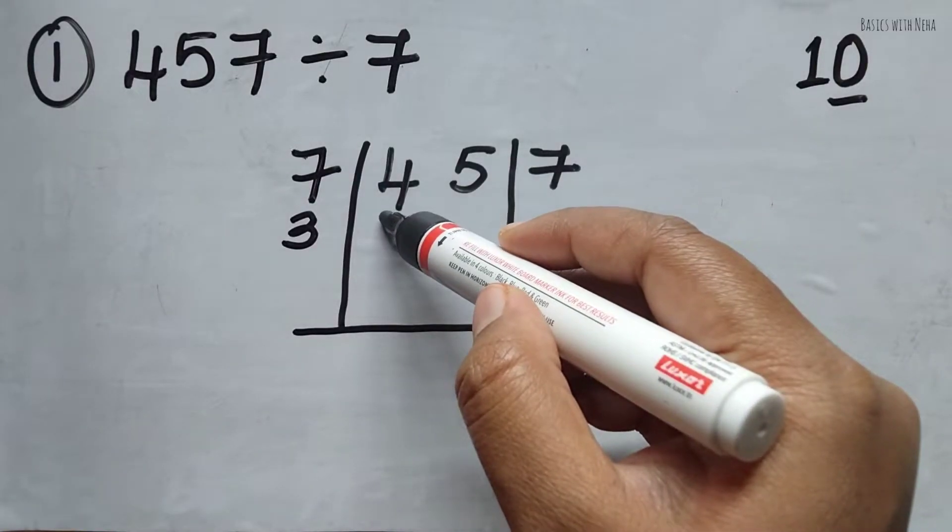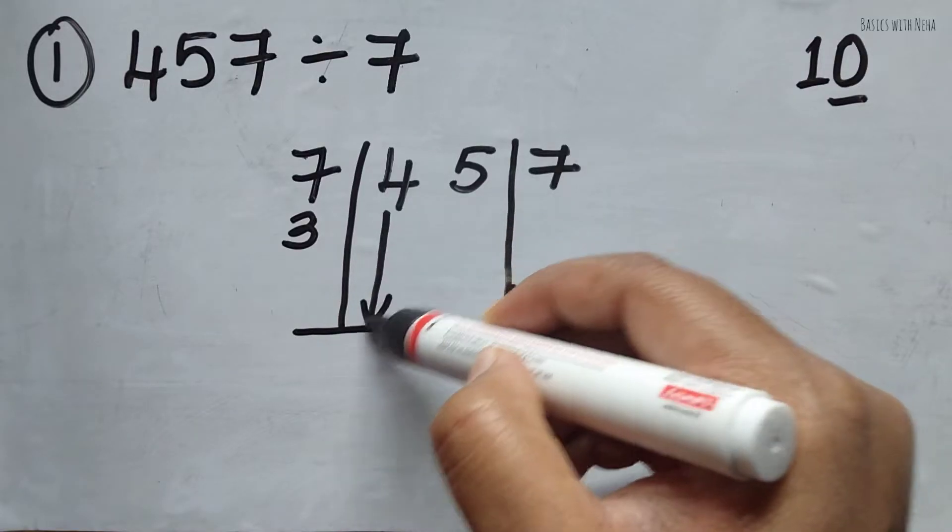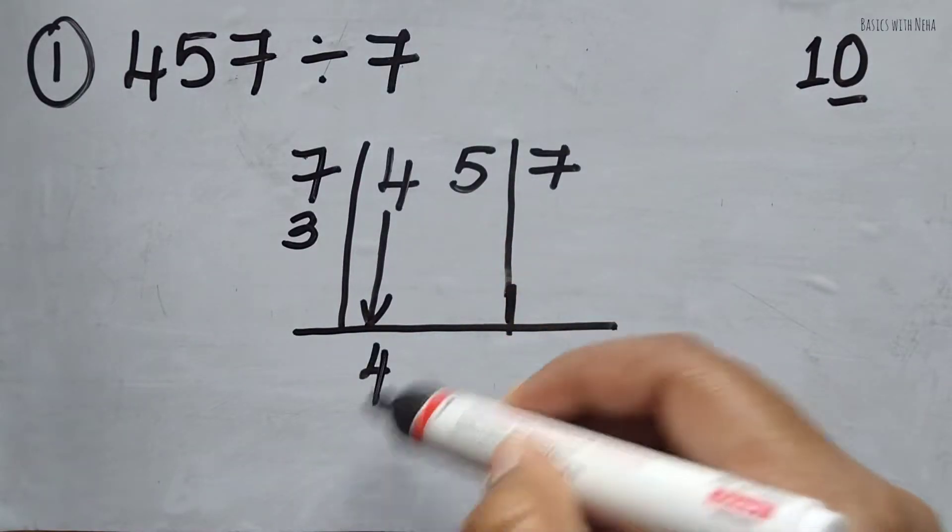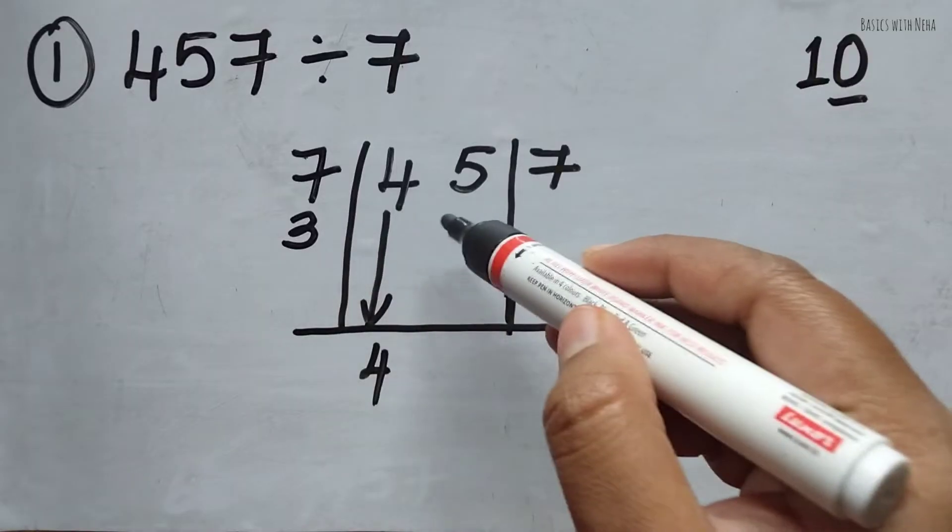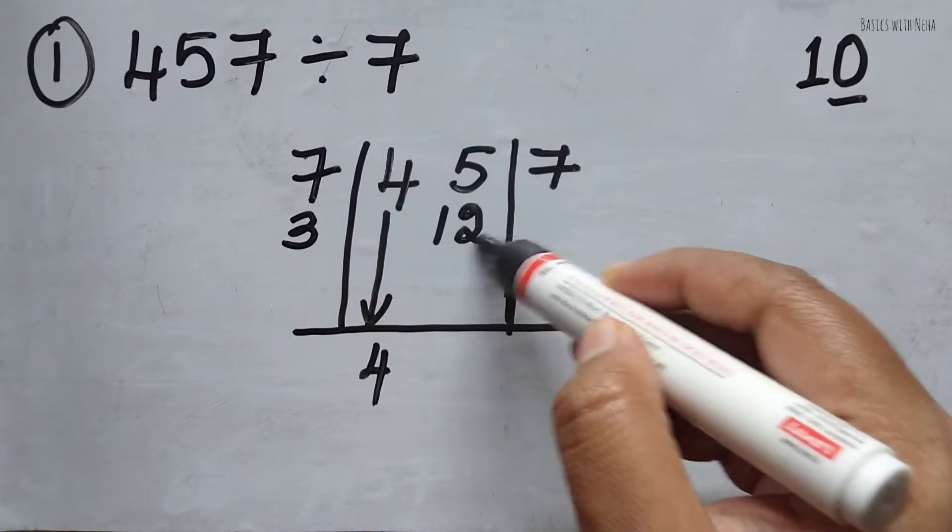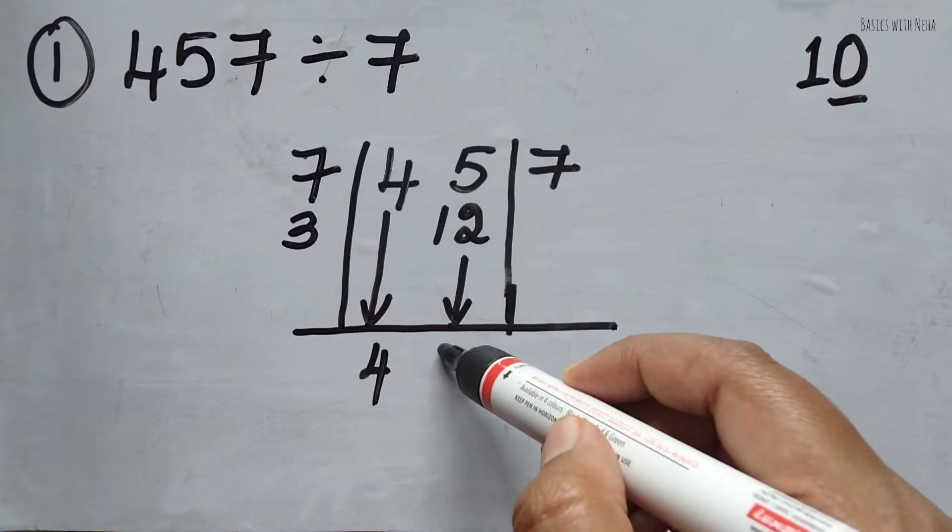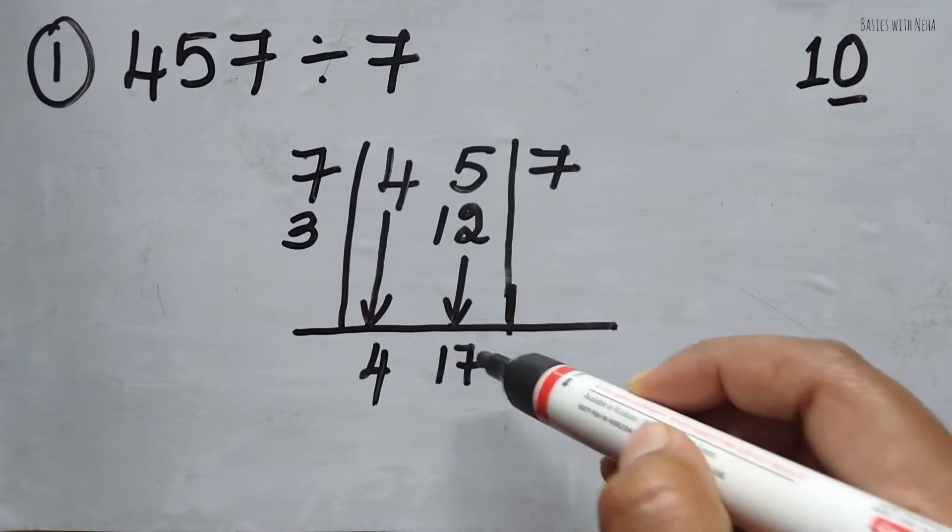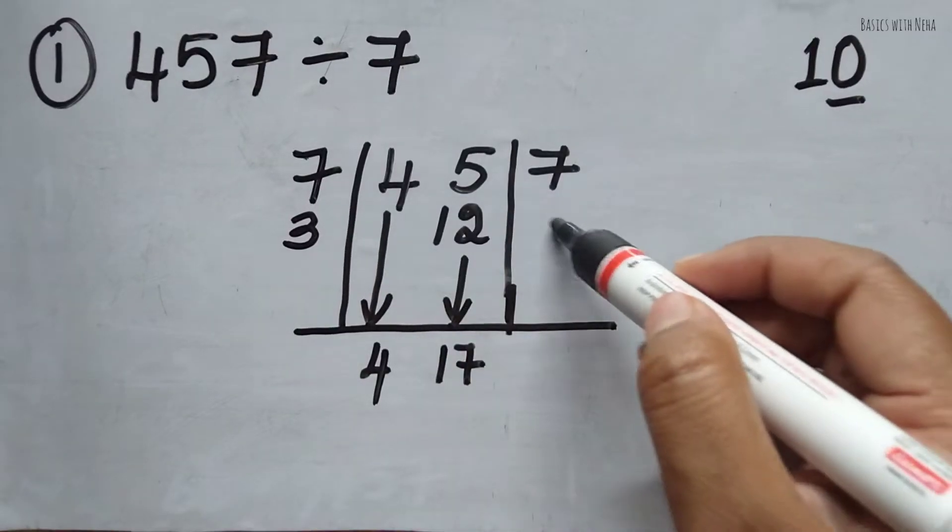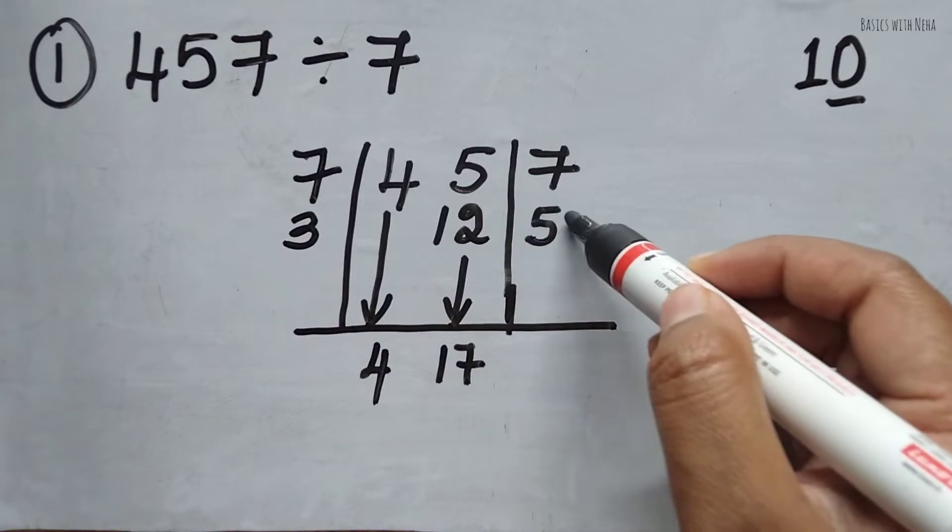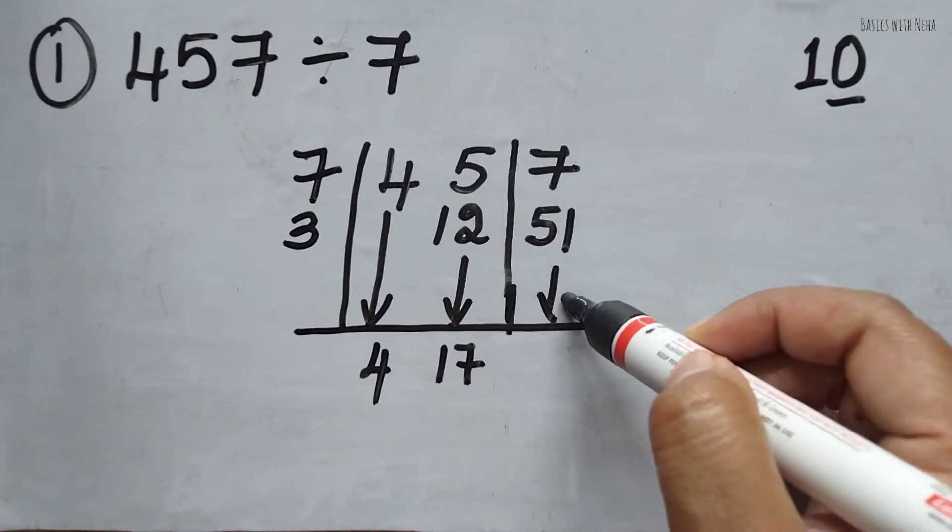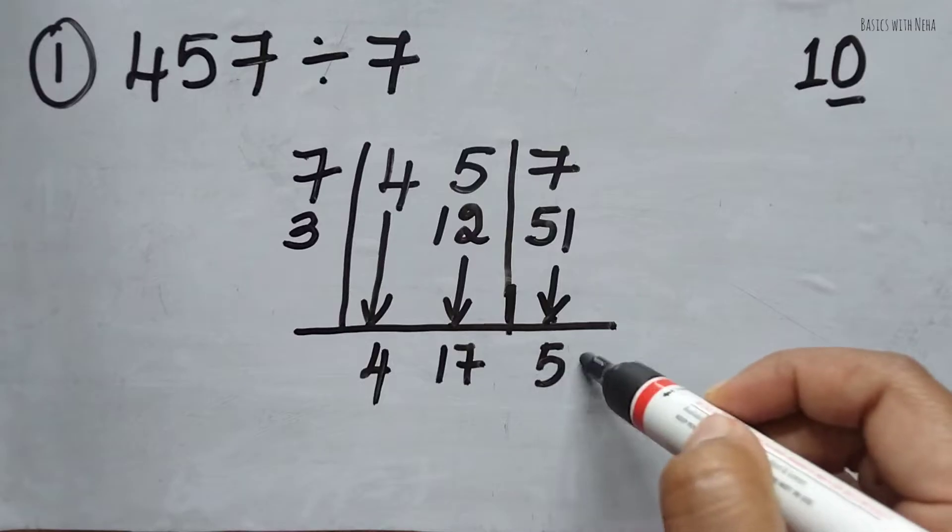And now we can close this here. 4. So the first step is you have to drag this 4 as it is. 4 threes are 12. I'm going to write 12. Now add these two, which will be 17. And 17 threes are 51. And now add these two, which will become 58.